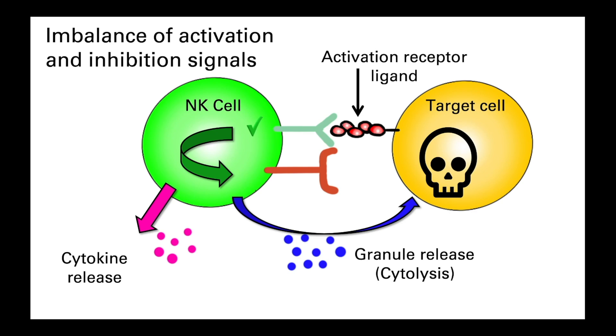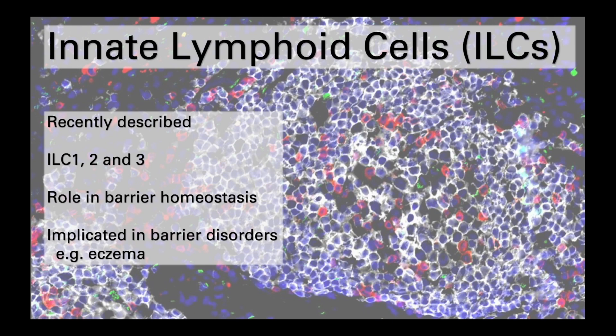Please note that there are many more receptor interactions than illustrated here, so there are multiple inhibitory and stimulatory signals being received by the NK cell at any one time. The final type of cells we are going to discuss briefly are the innate lymphoid cells, as they have only recently been described. There are three main families — ILC1, ILC2 and ILC3 — and they appear to play a role in barrier integrity and homeostasis, so they are often associated with the epithelial cells, where they drive wound healing. But they have also been implicated in barrier diseases like eczema.